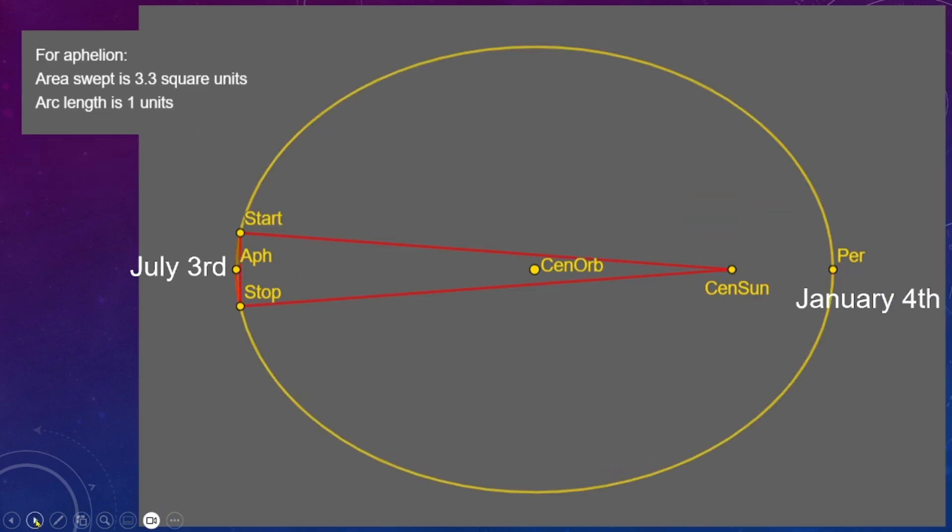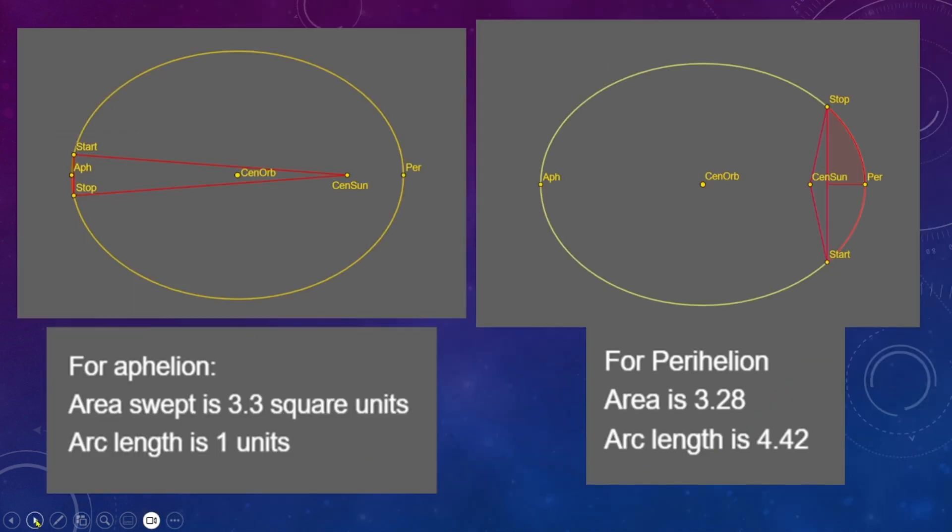Whereas if I did the same thing over at the aphelion, 3.3 square units gave an arc length of only one unit. In this model, during January the Earth would be orbiting 4.42 times as fast as it would in July.